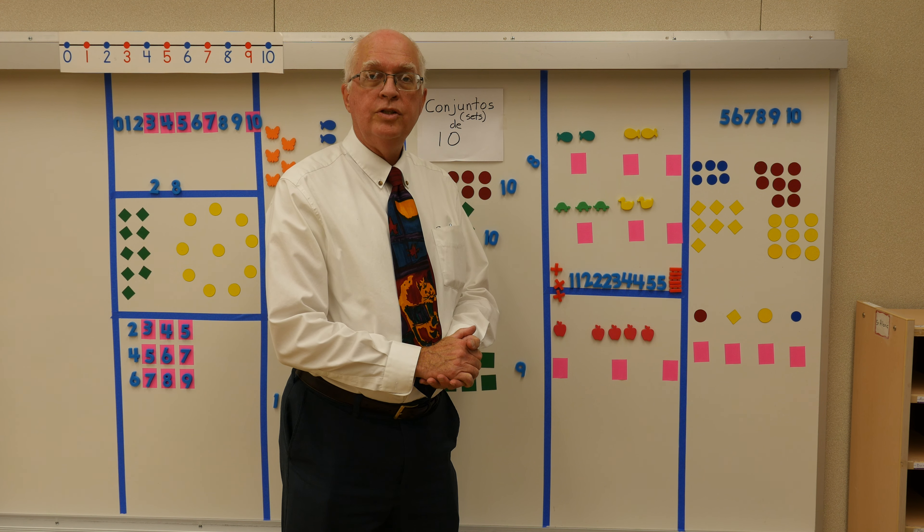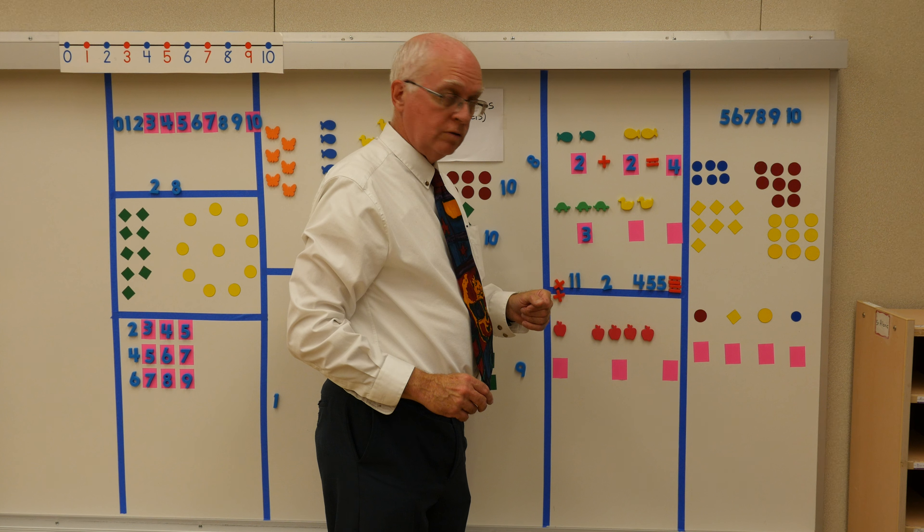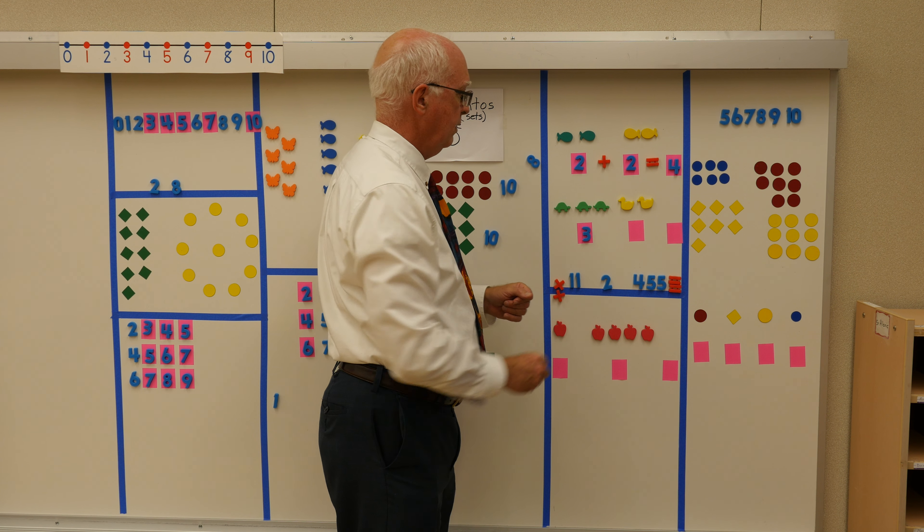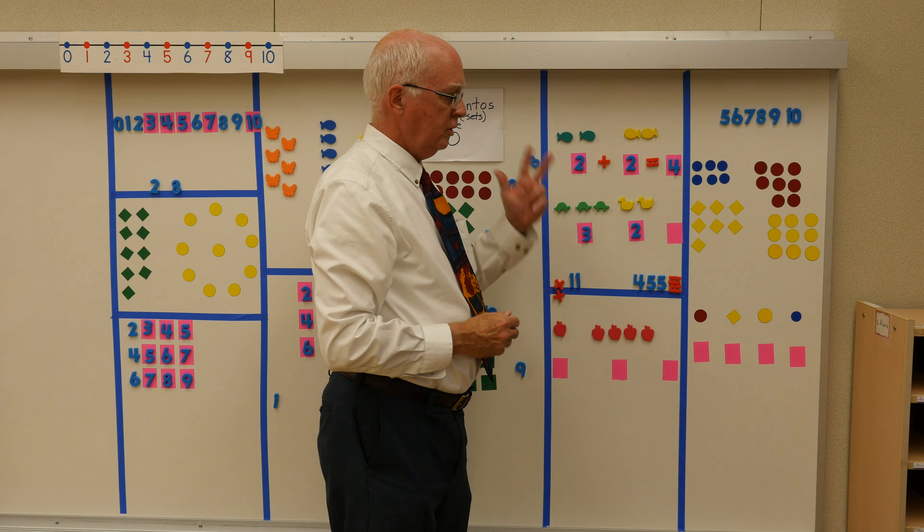Más abajo, yo tengo tres tortugas. Ahora vienen dos patos en el estanque. Si yo tengo tres y dos más, how many do I have with three and two together? Yo voy a utilizar más. Tres más dos es igual — yo voy a contar los objetos: uno, dos, tres, cuatro, cinco. Es igual a cinco.